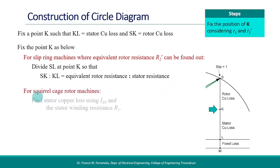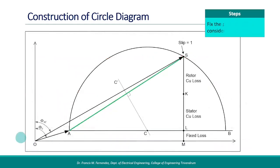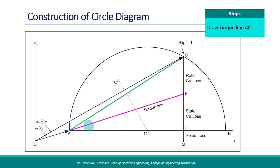For squirrel cage machines, the rotor resistance is not measurable, so we depend on copper losses. First, find the stator copper loss using ISN and stator winding resistance R1. The total copper loss is available from the blocked rotor test data. Then rotor copper loss equals total loss minus stator loss. Mark point K so that the ratio SK to KL equals rotor copper loss to stator copper loss. Remember all these parameters are per-phase values. After marking K, draw a line AK — this line is called the torque line. The line AS is named the output line.